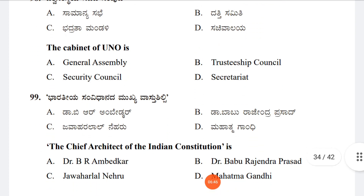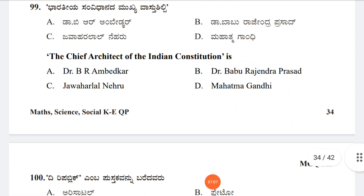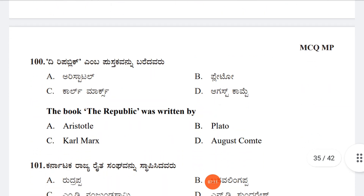Question 99: The chief architect of the Indian Constitution is Option A: Dr. B.R. Ambedkar, Option B: Dr. Babu Rajendra Prasad, Option C: Jawaharlal Nehru, Option D: Mahatma Gandhi. The answer is Option A, Dr. B.R. Ambedkar.